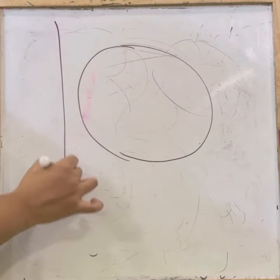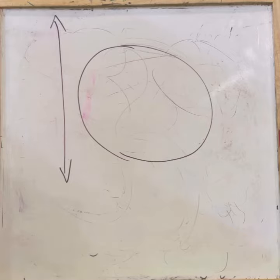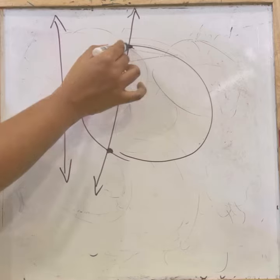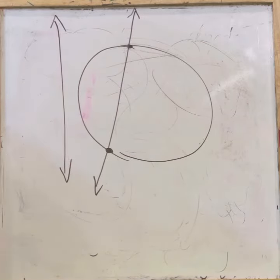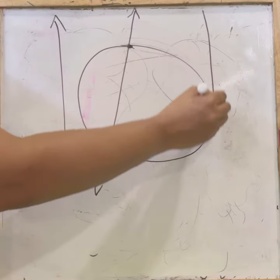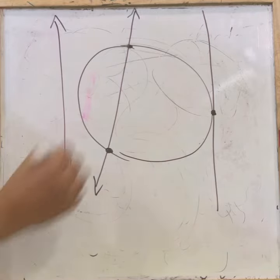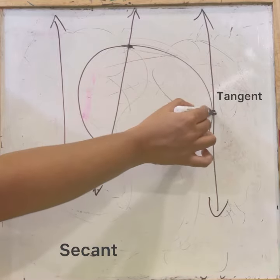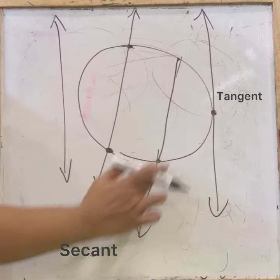Coming to this chapter — a line passing outside the circle without touching it is a non-intersecting line. A line passing through the circle intersects it at two points. A line touching the circle at exactly one point intersects at only one point on the circle.